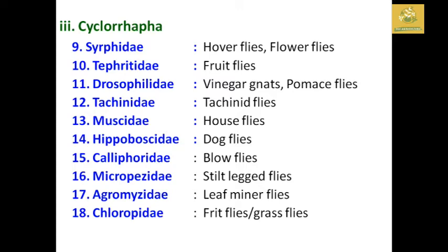Cyclorrhapha is the larger suborder and contains around 10 families: Syrphidae, Tephritidae, Drosophilidae, Tachinidae, Muscidae, Hippoboscidae, Calliphoridae, Micropezidae, Agromyzidae, and Chloropidae. These are the 10 families present in Cyclorrhapha.